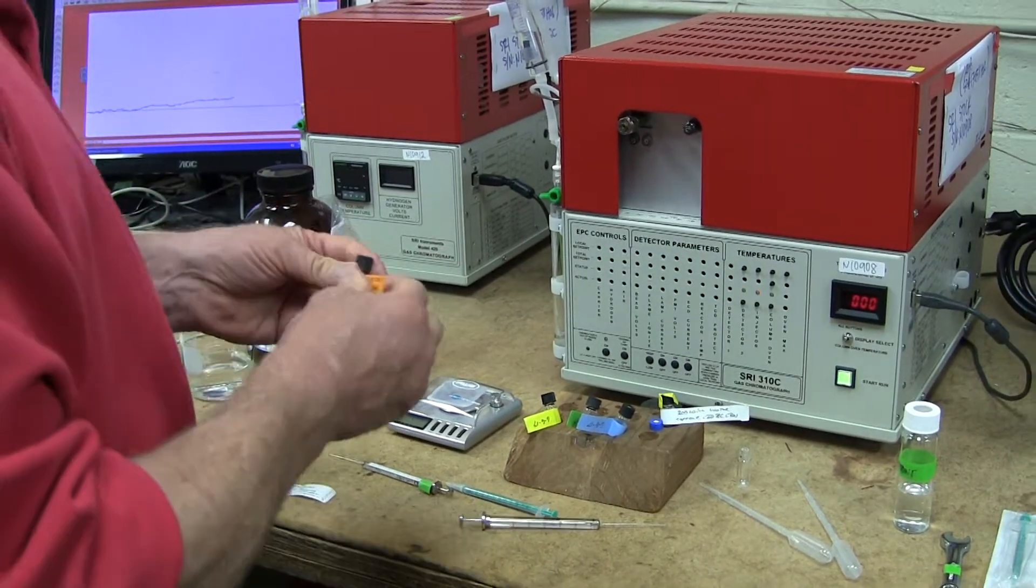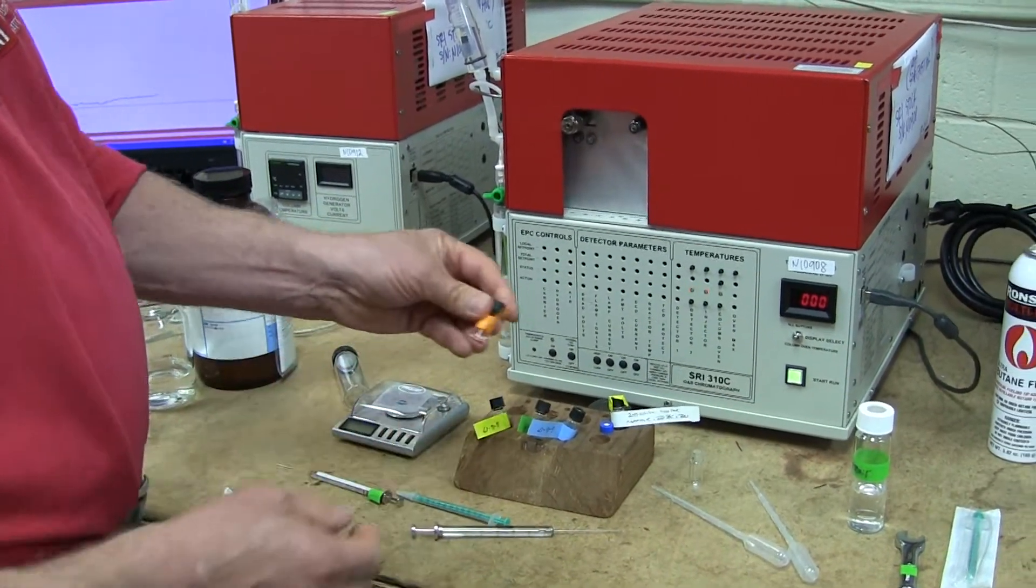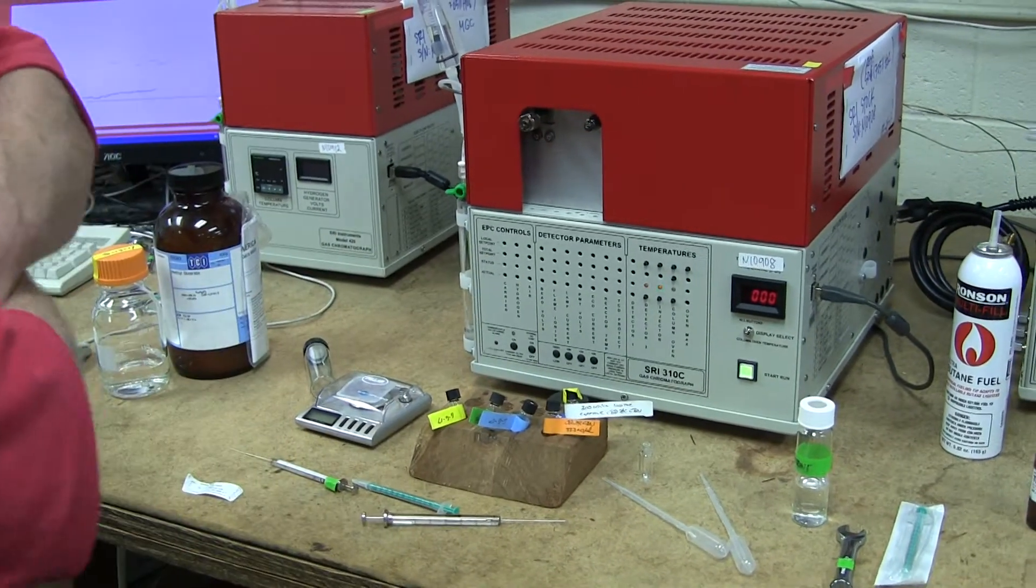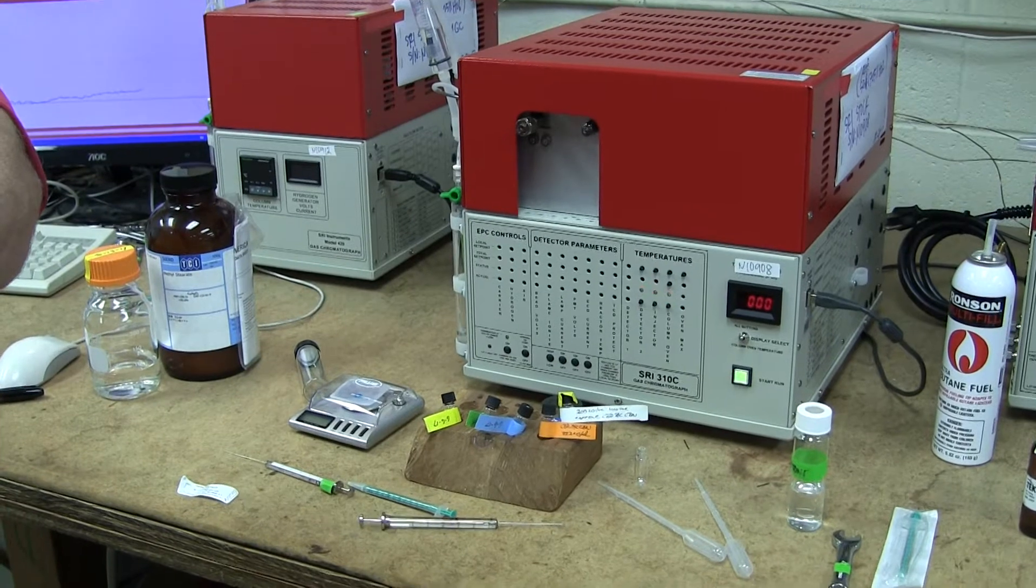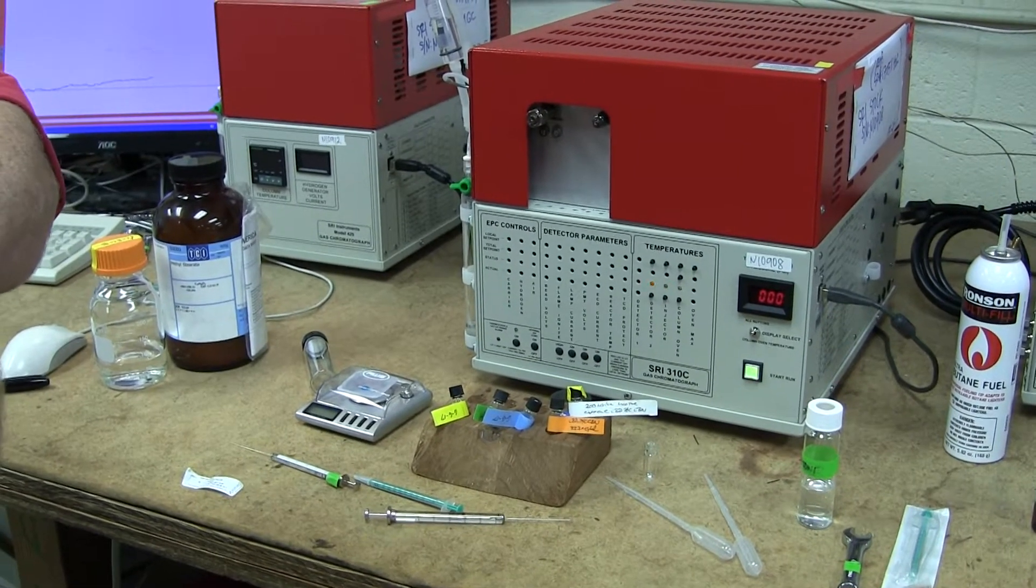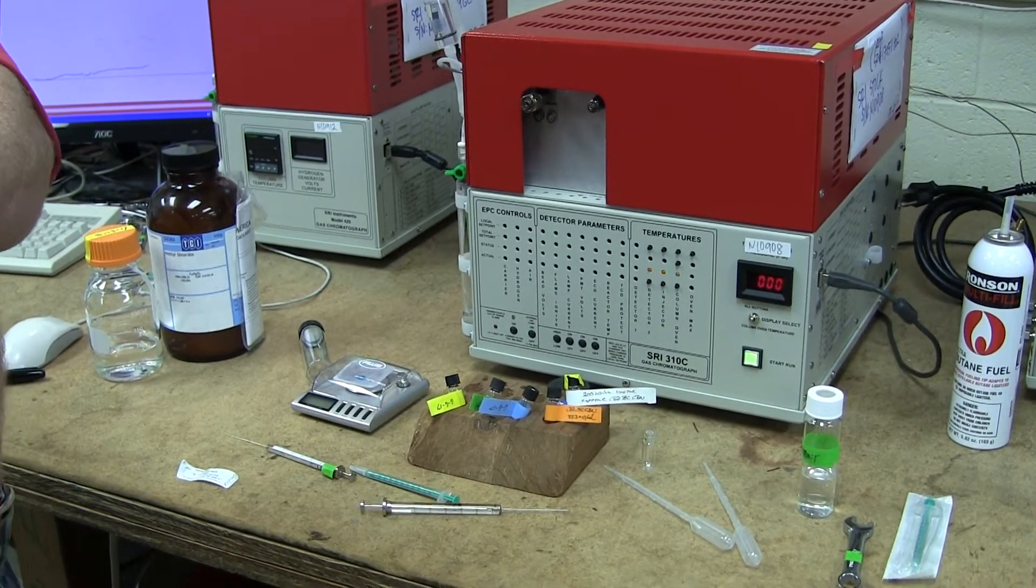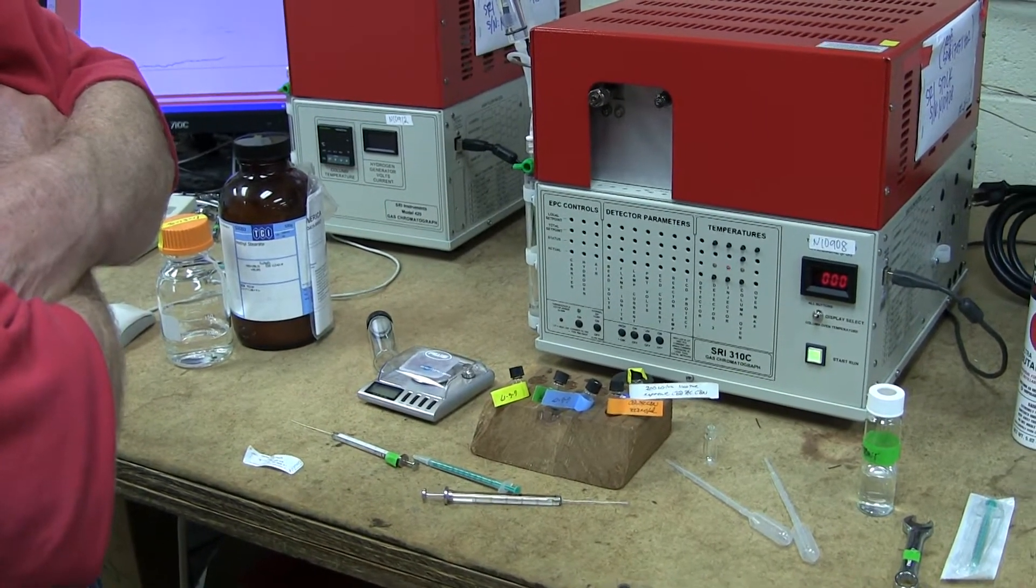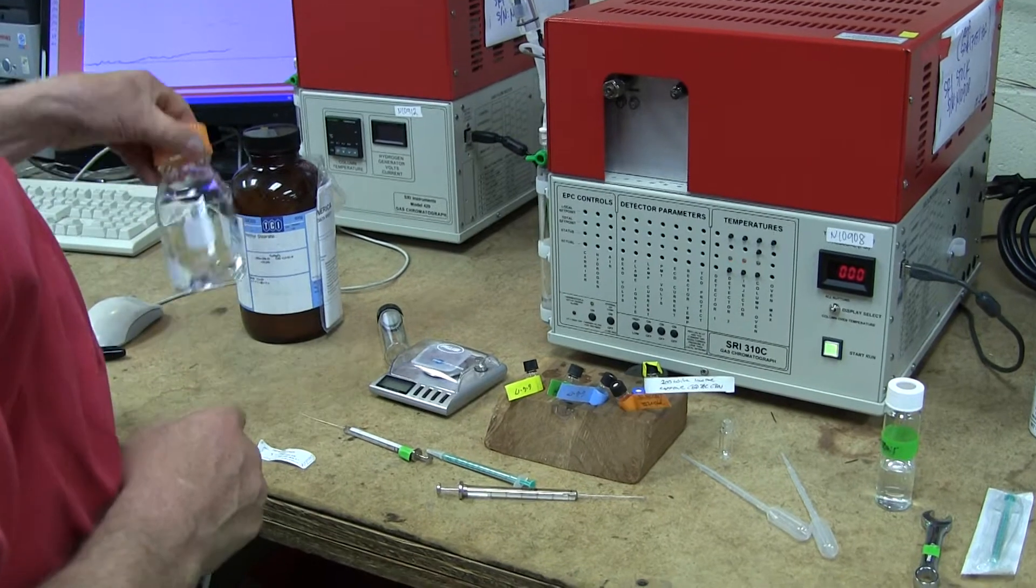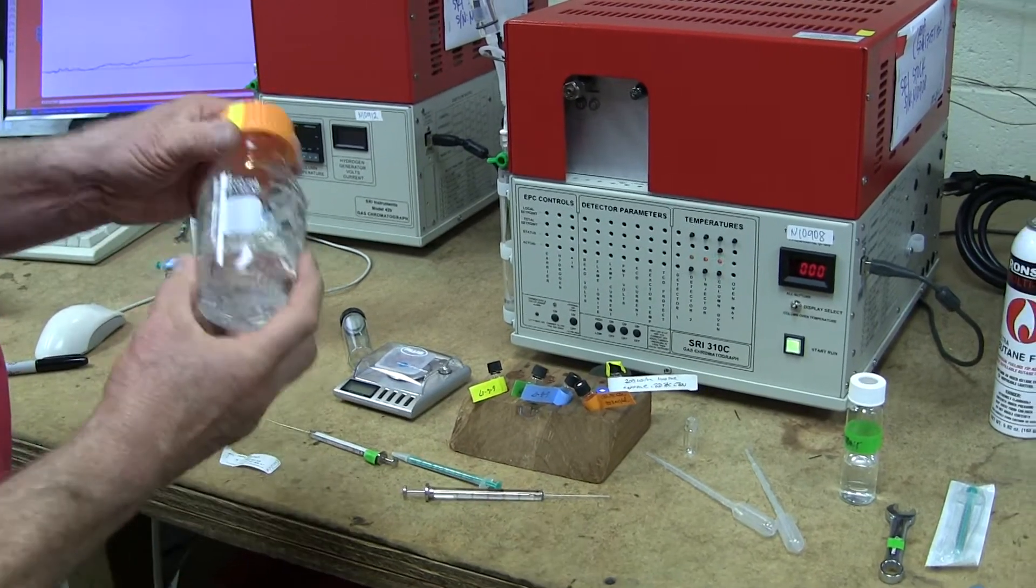So, you could use this, just like this, this would be called the working standard if you were using the external standard method of calibration. But we are going to use the internal standard method of calibration. So for that, we need to have an internal standard solution, which we happen to have here. And what this liquid is, is acetone from the hardware store, and this costs about $12 a gallon.